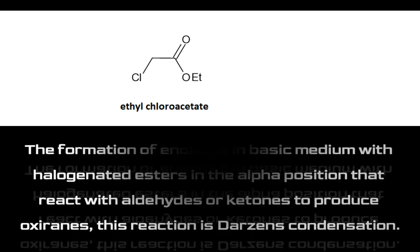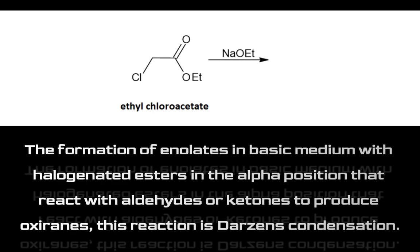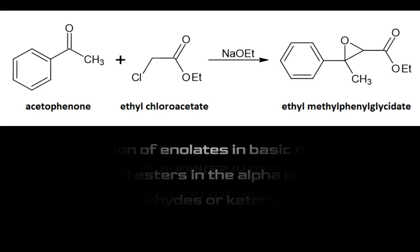The formation of enolates in basic medium with halogenated esters in the alpha position that react with aldehydes or ketones to produce oxiranes. This reaction is Darzens condensation.